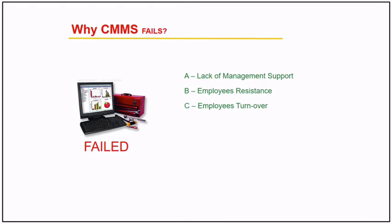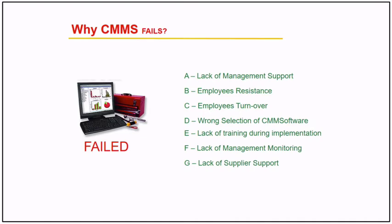Next is employee resistance. Sometimes people trained on old processes ask why a new system is needed. Another failure is employee turnover — the person assigned to CMMS is removed before they've mastered it, without fully understanding why CMMS was used in the company, and then a new person is given the role. Another reason for failure is wrong selection of CMMS software — sometimes we are drawn in by many features but end up with software that doesn't fit. We end up adjusting to the software instead of the software aligning to our process.